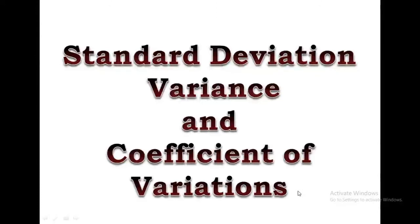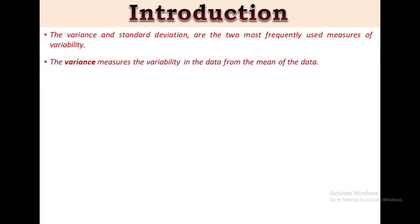To overcome these limitations, we require other measures of dispersion such as standard deviation, variance, and coefficient of variation. As all three measures are closely related, they will be covered simultaneously in this video. The variance and its square root, the standard deviation, are the two most frequently used measures of variability, and both use all the data in their calculation. The variance measures the variability in data from the mean of the data.